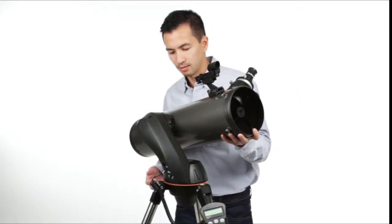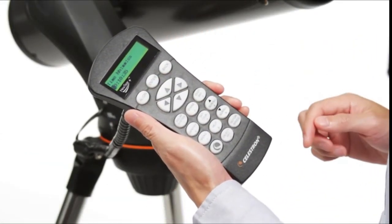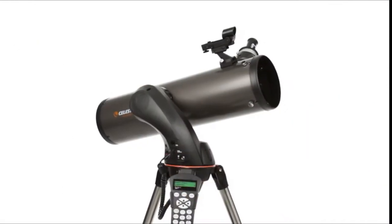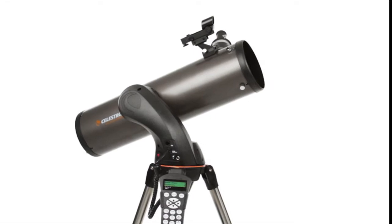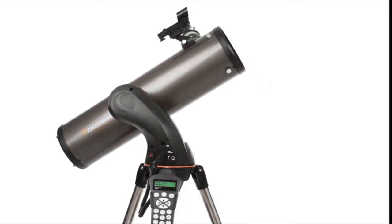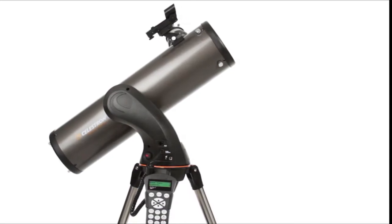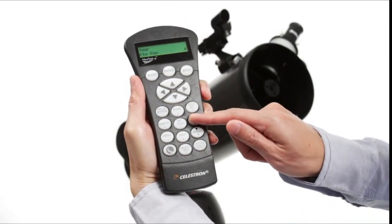Assembling the telescope takes just a few minutes. Then, the computerized Nexstar Plus Hand Control guides you through our sky-align procedure. Center any three bright objects, and the telescope is aligned and ready to locate any star, planet, or galaxy in its 40,000 object database. If you aren't sure what to observe, check out the SkyTour.